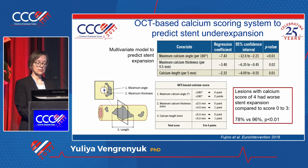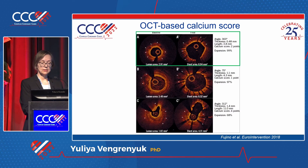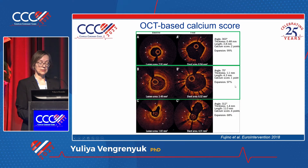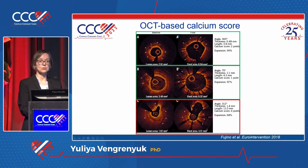Lesions with a calcium score of four had much worse stent expansion compared to lesions with a calcium score of zero to three. A calcium score of four means calcium maximum angle >2 quadrants, calcium thickness >0.5 mm, and calcium length >5 mm. For example, a calcium angle of 360° but thin and short will not significantly interfere with stent expansion, while a calcium score of four resulted in stent expansion of only 68%.